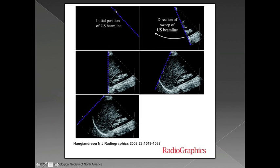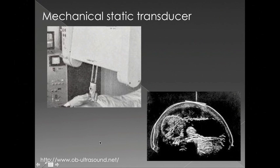So initially the ultrasound machine sends out a beam along one line, then the next one next to it, and the next one next to that, and so on, until you've built the whole field of view by sweeping across with different sets of echoes.